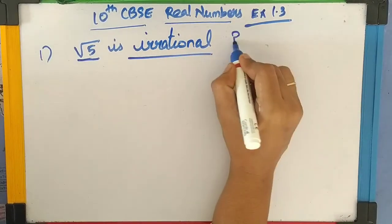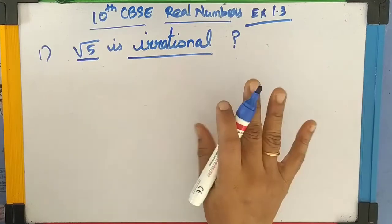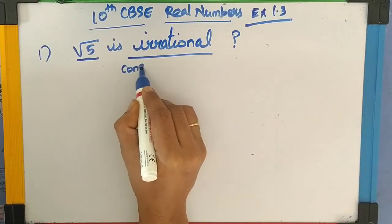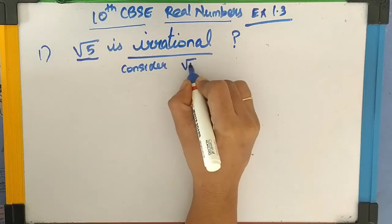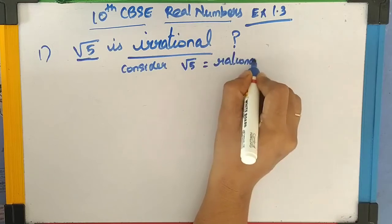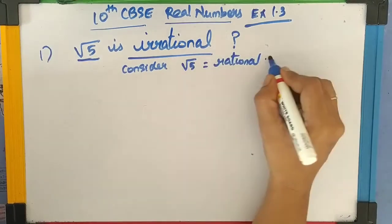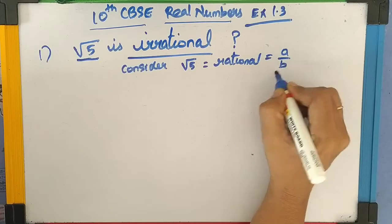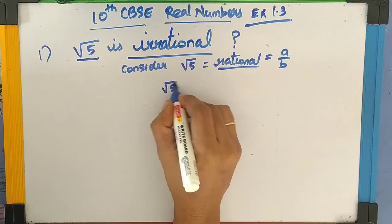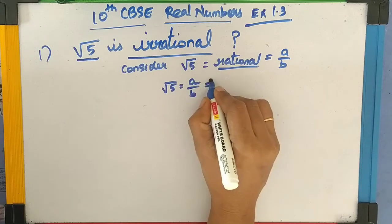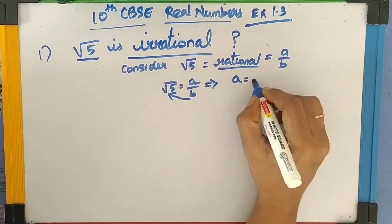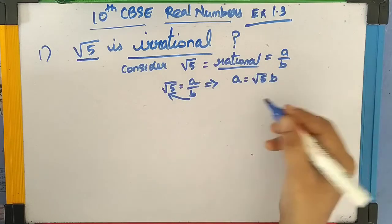Let's go to the first problem. We should prove that square root of 5 is irrational. For that, the first step is we have to consider square root of 5 as a rational number. So, square root of 5 equals a rational number. Any number that can be written in A by B form is a rational number, where A and B are co-primes. So, square root of 5 equals A by B, and bringing B to the other side, A equals square root of 5 times B.